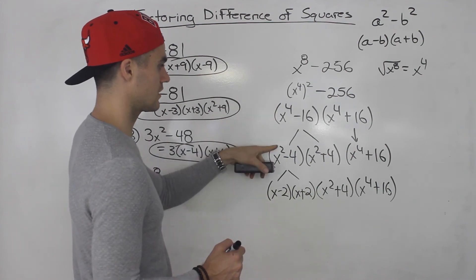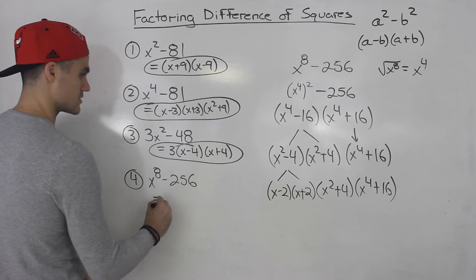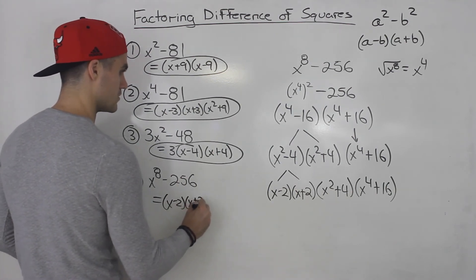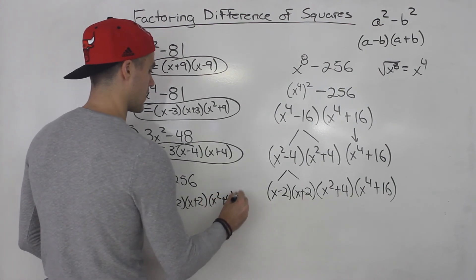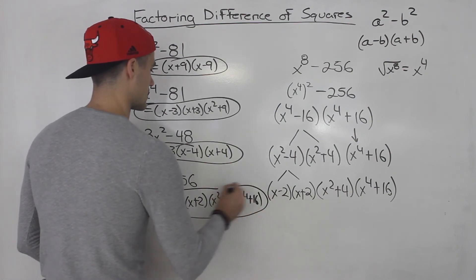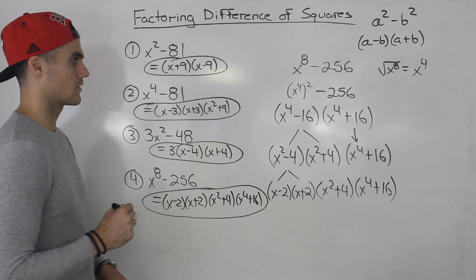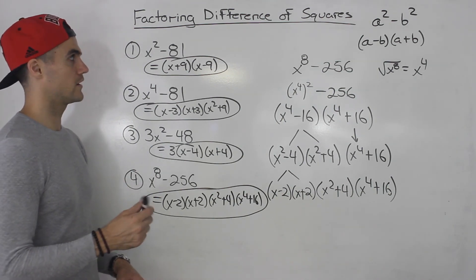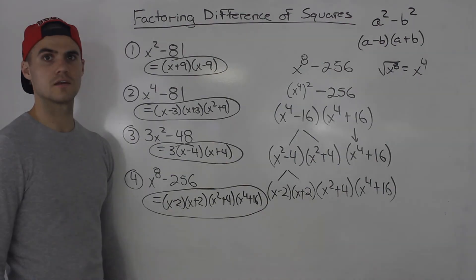So the final answer is x minus 2, x plus 2, x squared plus 4, x to the power 4 plus 16. Tons of different tricks can come up when you're factoring as a difference of squares, and we're going to do more examples in the next video.